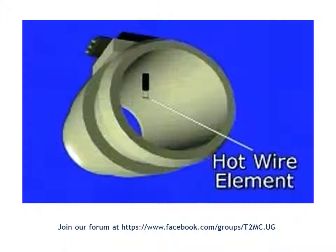Generally, there are two types, two common types of mass airflow, although one is less common than the other. The most common one in almost all the vehicles in Uganda is usually the hot wire element version.